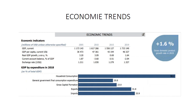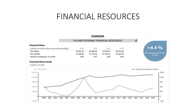Economy trial. GDP by expenditure in 2018: household consumption, general government consumption, expenditure, gross capital formation, exports and imports. FDI outflow, personal remasters, and finance follow strength.